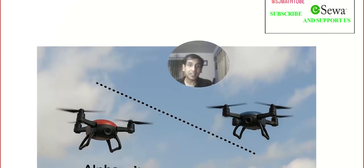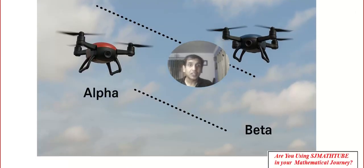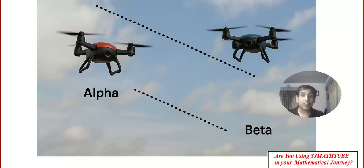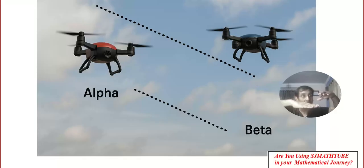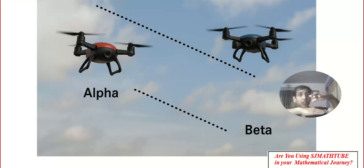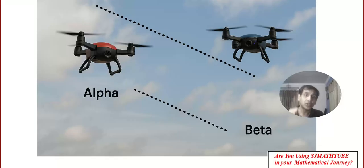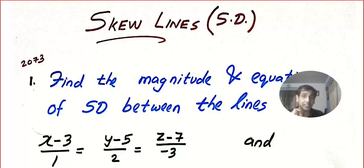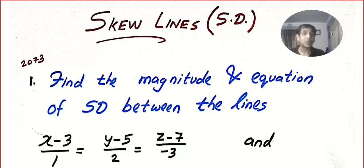Here's a small application: you can see two drones — Alpha and Beta, the red one and the blue one — flying in the sky, one above the other. If I want to know how close the drones will come, all I need is the path of the two drones as two lines and then calculate the shortest distance.